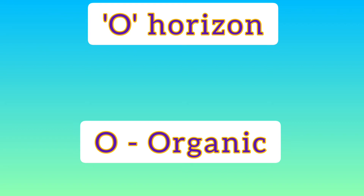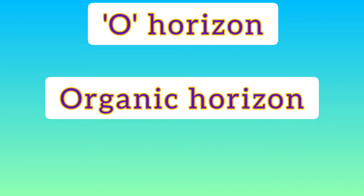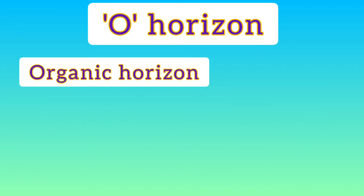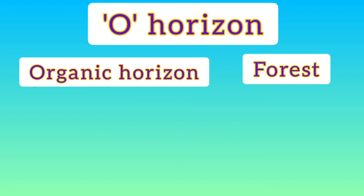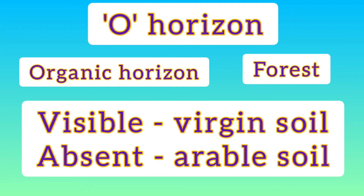Starting with Horizon O — from the word O, we can connect that it must be containing organic matter. Yes, it is also known as the organic horizon, found above mineral soil. It is generally found in forest areas, and this O horizon is visible in virgin soil and is absent in arable soils.